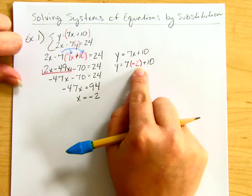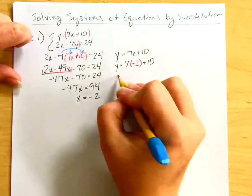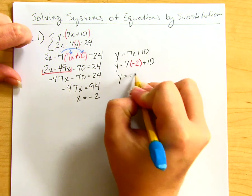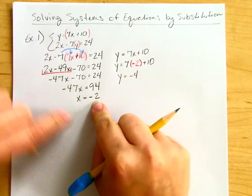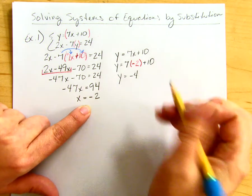So 7 times -2 is -14, and -14 + 10 = -4. Therefore, the x value of my ordered pair is -2, and the y value is -4.